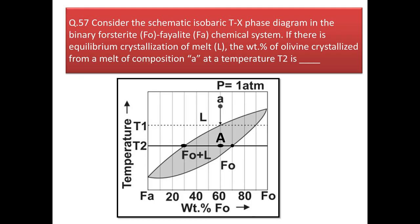Next question: consider the isobaric temperature-concentration phase diagram of the binary forsterite-fayalite system. With equilibrium crystallization of the melt, find the weight percentage of olivine crystallized from a melt of composition A at temperature T2. At T2 there are two compositions — the line joining a point to the liquidus curve gives the solid percentage (lever rule: solid side divided by total). From the figure, the composition lines show the solid is 30 (60 minus 30) and the liquid is 10 (40 minus 30). Weight% solid = 30/(30+10) × 100 = 75%.